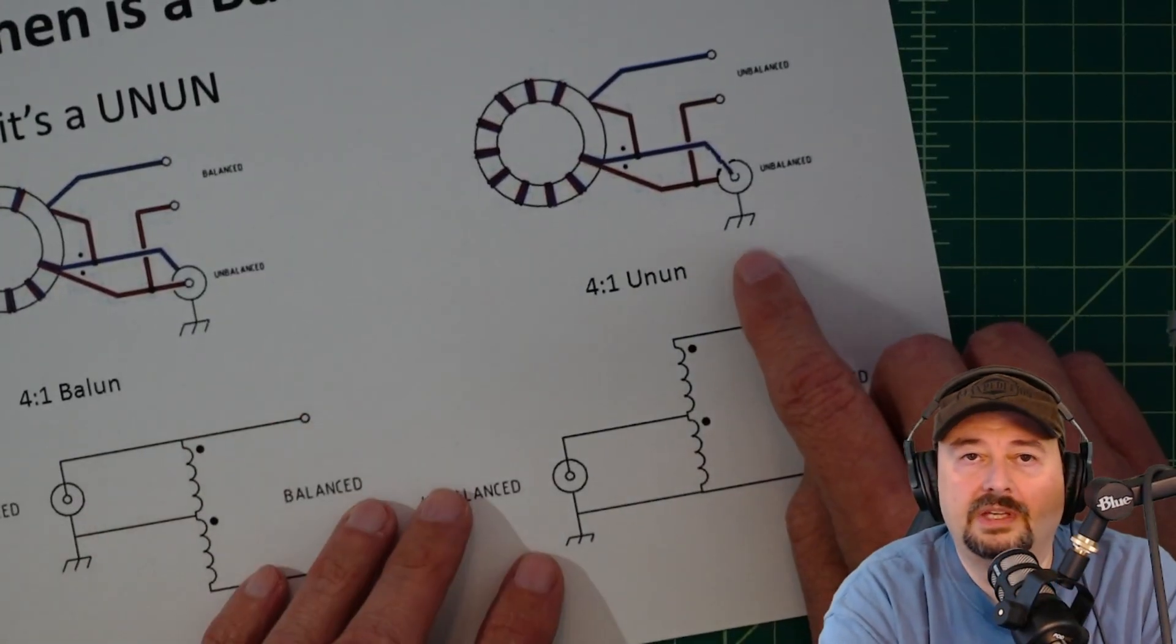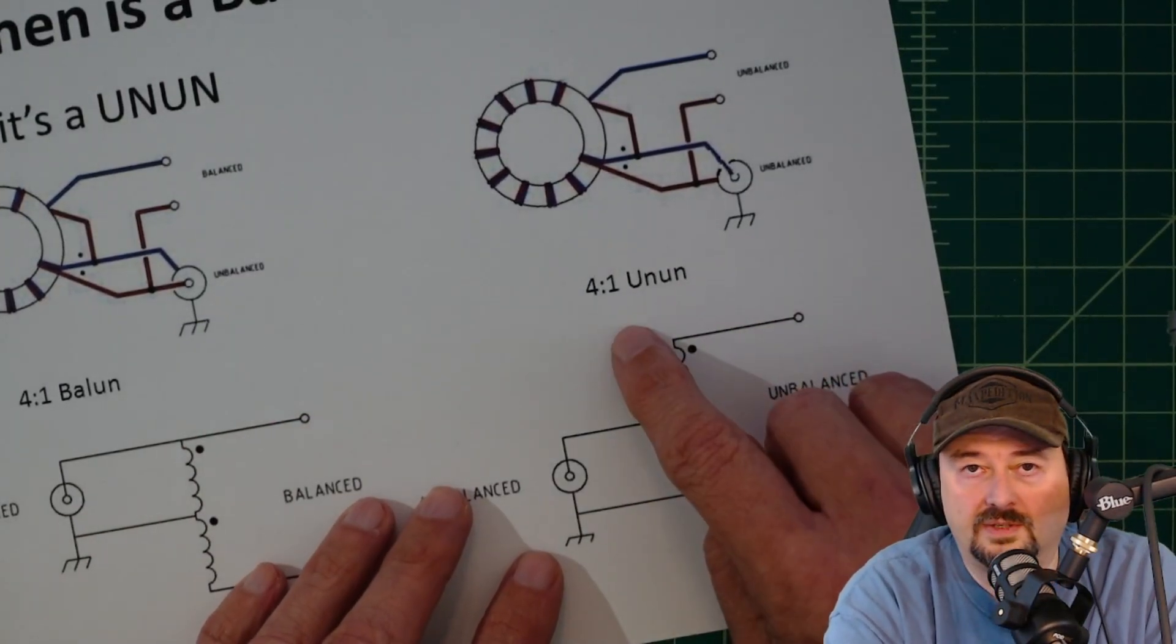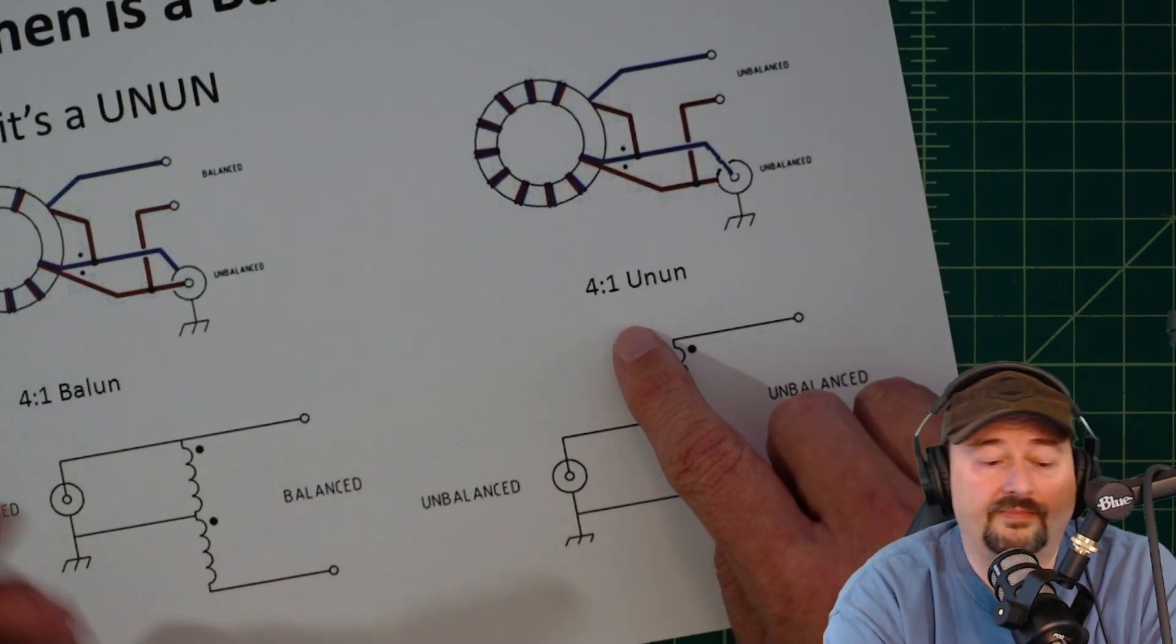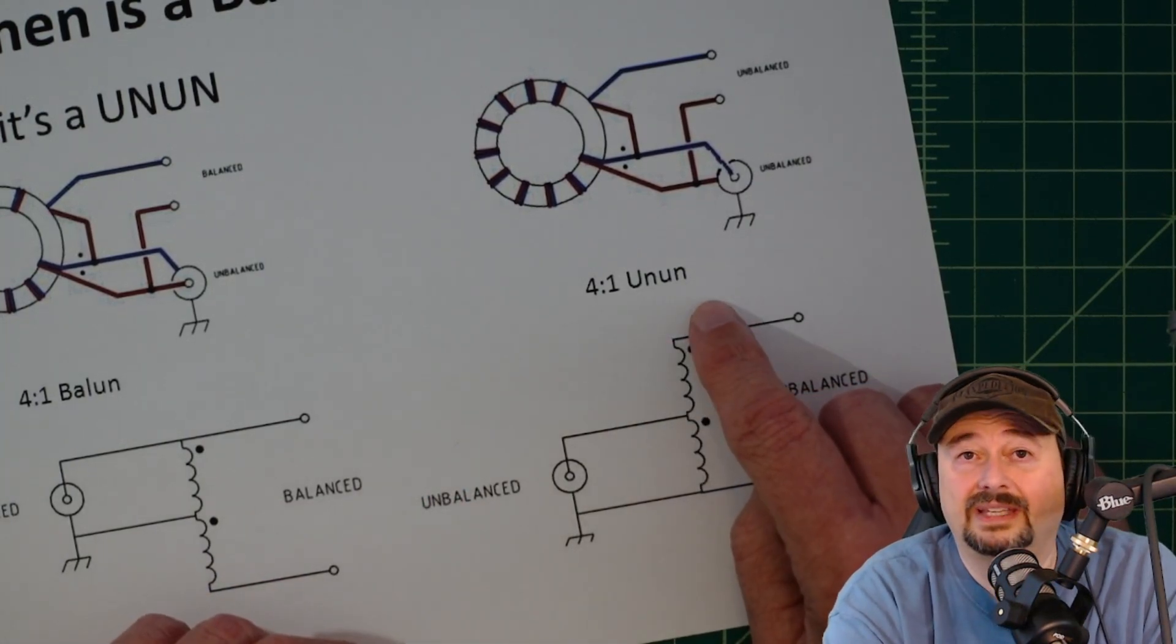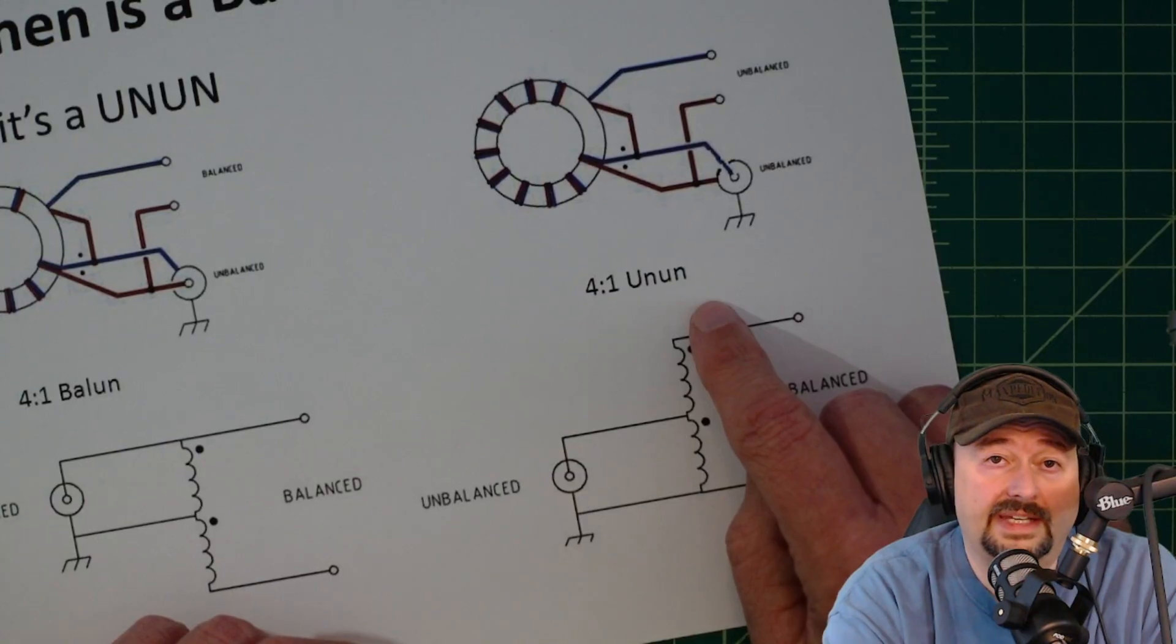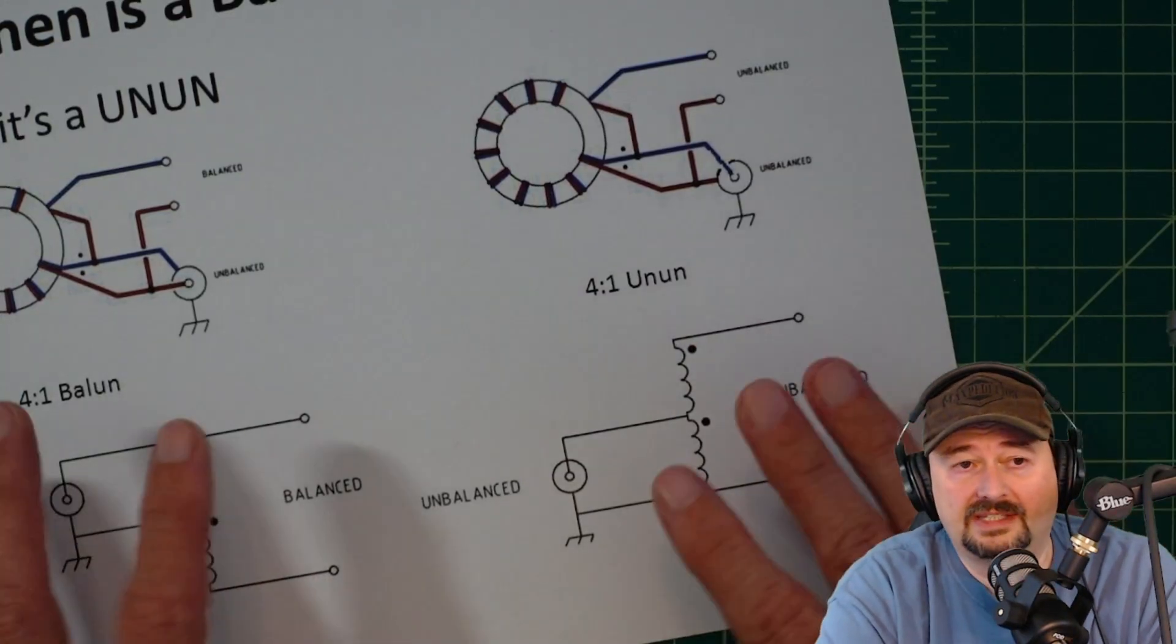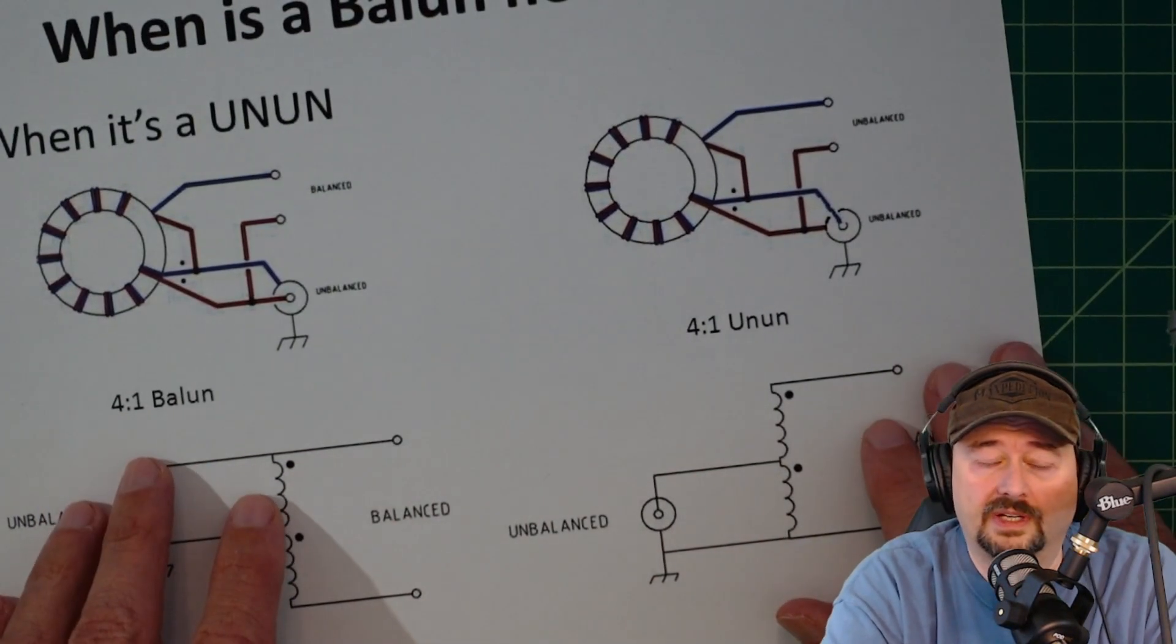On our unun, we use these to connect an unbalanced transmission line like a coaxial cable to an unbalanced antenna, like an NFED or an off-center fed dipole. There's other use cases for both of these, but they're the two that we want to cover in this video.